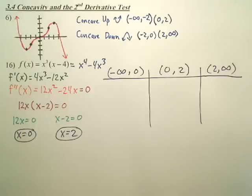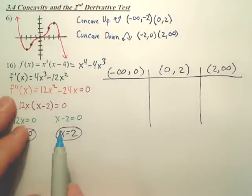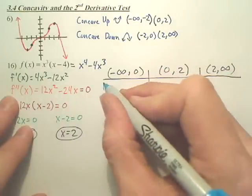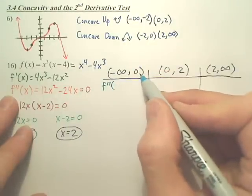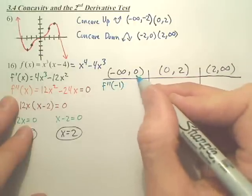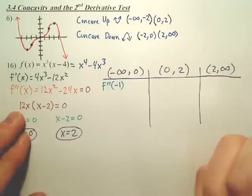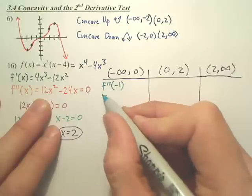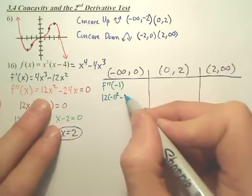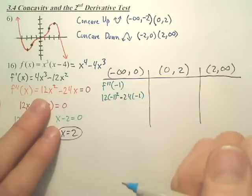But, what are we going to plug in? We are going to plug it into which derivative? The second. So, f double prime, what's an easy number? Probably negative 1. What do you get? Well, you get 12 times negative 1 squared minus 24 times negative 1. That looks like a positive value.